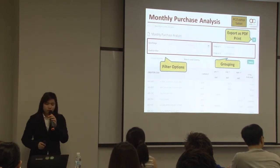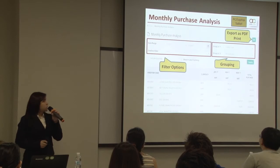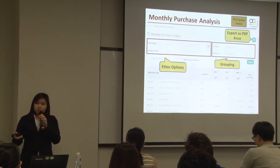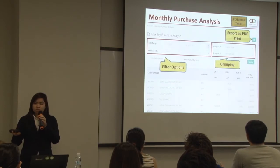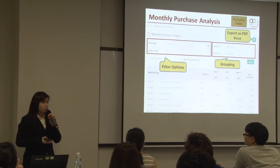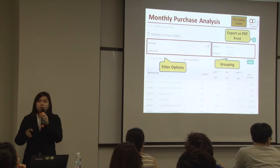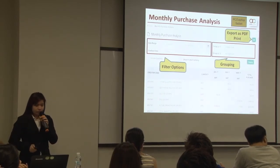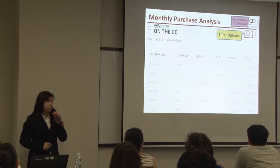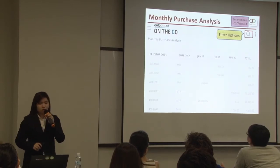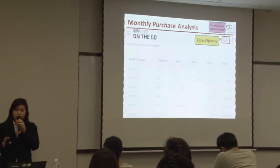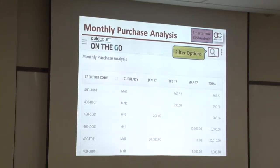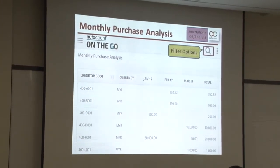This is one of the purchase reports — the Monthly Purchase Analysis Report. You can get the standard features in the purchase report: filter options, and also grouping. On smartphone, you can touch the icon to get the filter options.